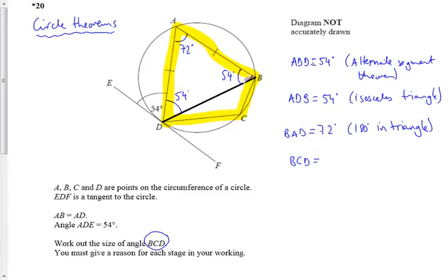Well, opposite angles in a cyclic quadrilateral add up to 180, so that means that must be 108 degrees, because opposite angles in a cyclic quadrilateral equal 180 degrees.